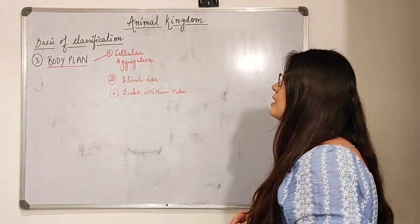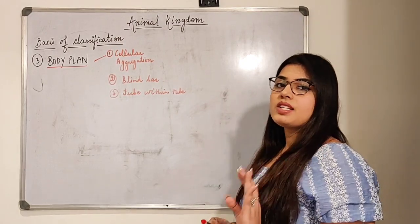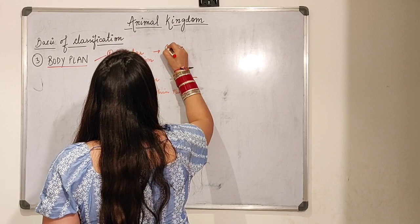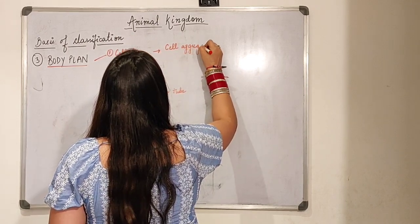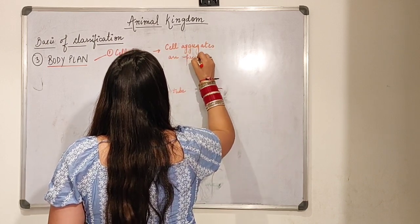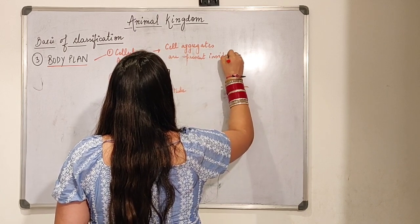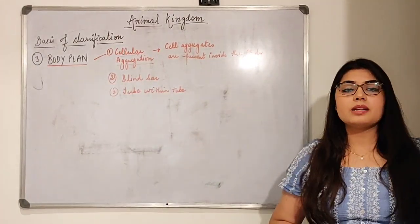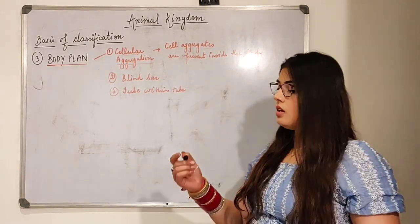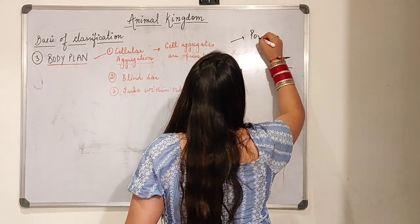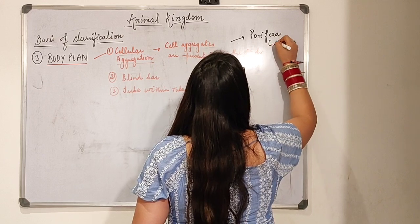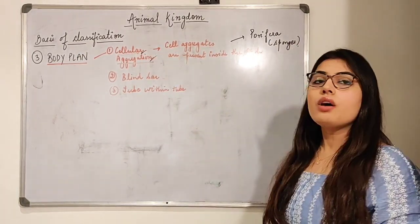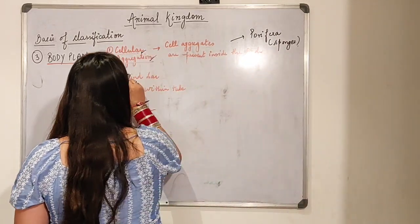Cellular aggregation means that only cell aggregates are present inside the body — just the cells are performing and present inside. An example of cellular aggregation is Porifera, which is also known as sponges. So Porifera is the perfect example of cellular aggregation.